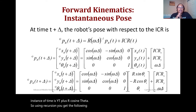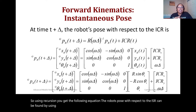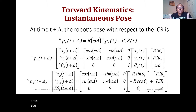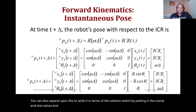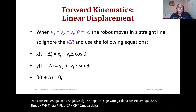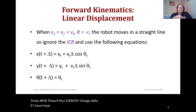Using recursion, the robot's pose with respect to the ICR can be found by using the rotation matrix times the position of the robot plus the ICR at that certain time. You can also expand this to write it in terms of the rotation matrix by substituting in the cosine and sine values and then adding the value of the ICR at that time.